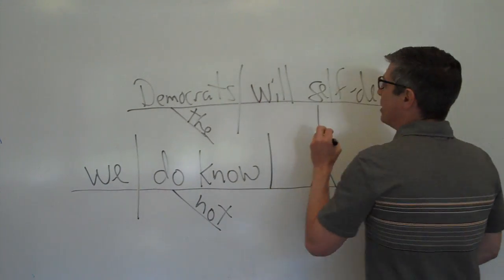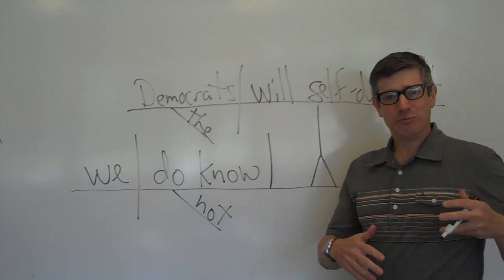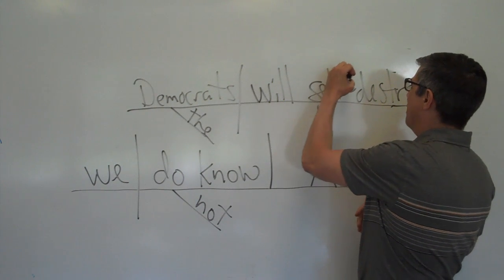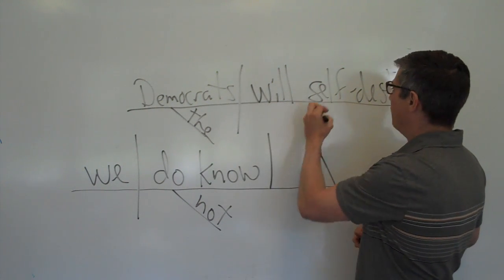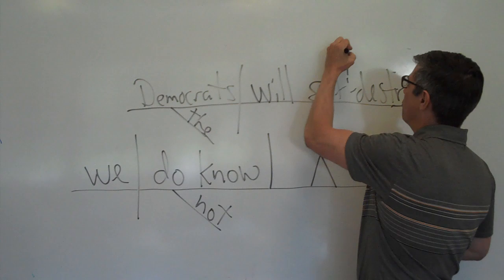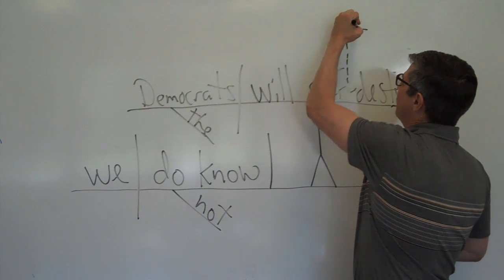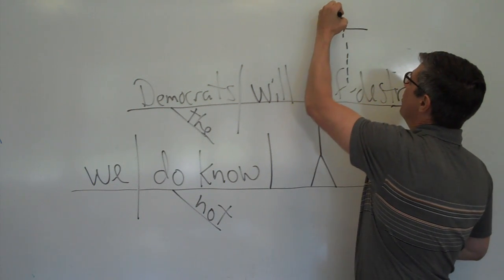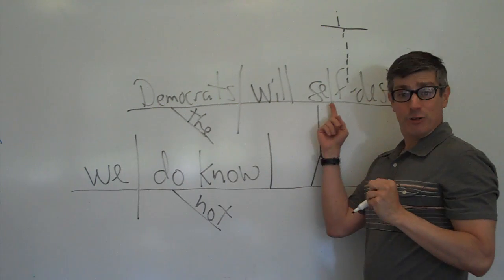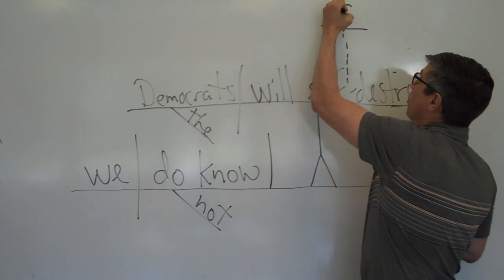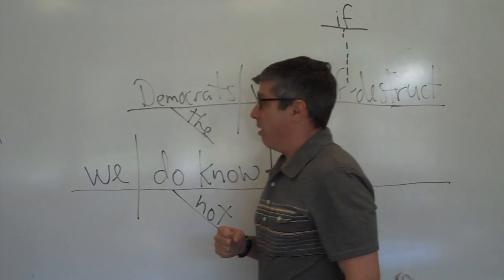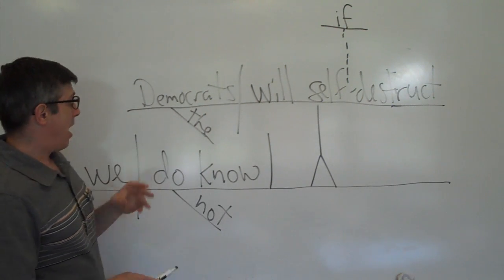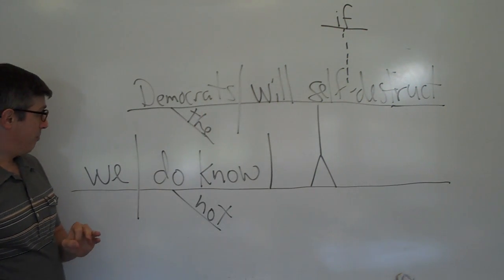And the way we diagram it, that is, it doesn't have any easily defined grammatical function here. So we draw a dotted line and a little pedestal up there, a dotted line down to the verb. And we put our expletive up there. And this is how you would diagram the sentence.